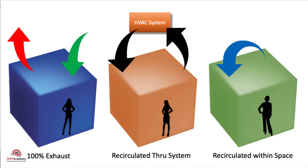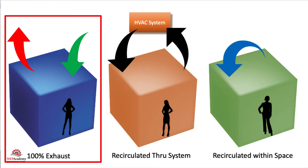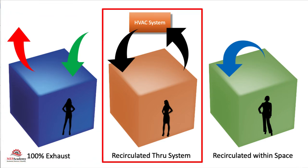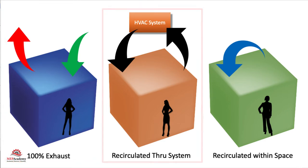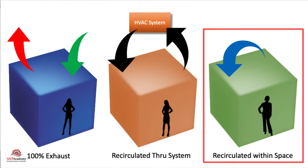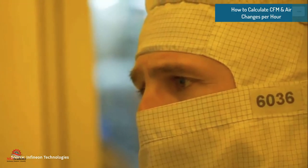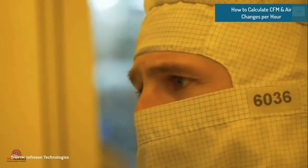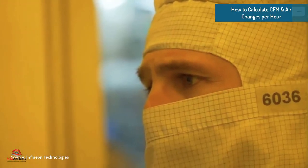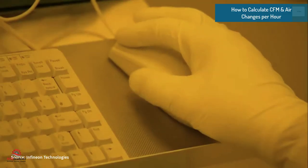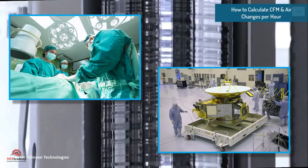Air changes per hour is an indication of how many times the air within a space is exhausted, recirculated through the system, or recirculated within the space. We'll cover how to calculate CFM and air changes using several different examples including hospitals and clean rooms.